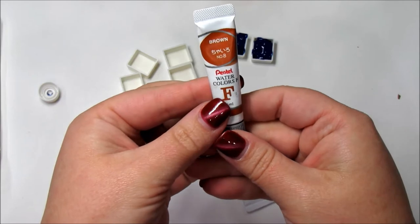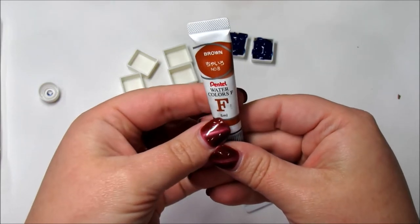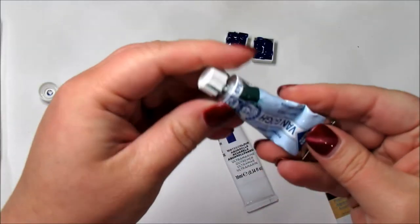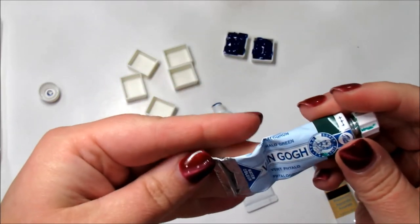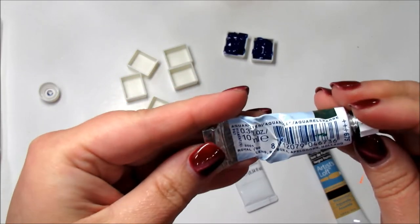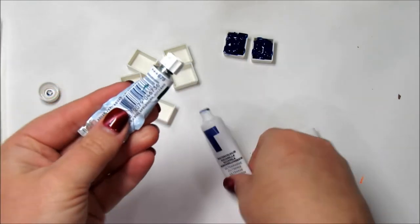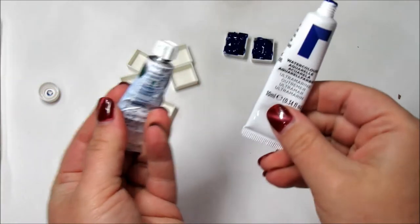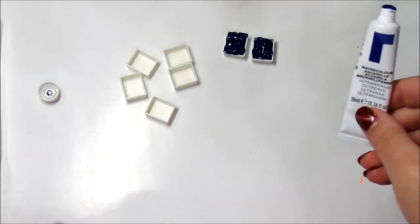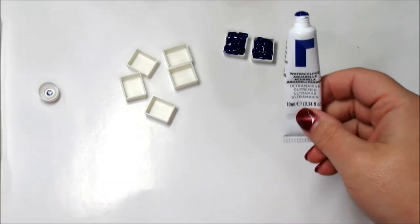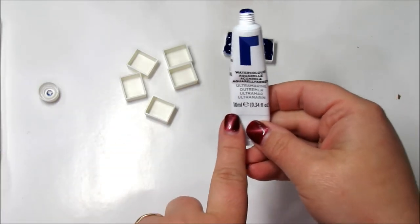This is a Pentel, and it's pretty tiny, and it's 5 milliliters, so it's half the size. And this is a half-used Van Gogh, and it is the 10 milliliters as well. So it's the exact same size as the Reeves. So, sorry I didn't do this earlier, but I do want to show you that this is a pretty standard size tube.